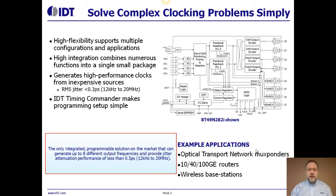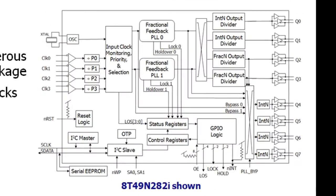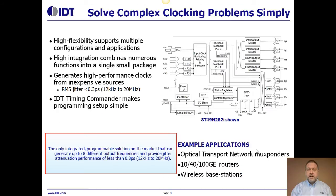So with our third generation of the UFT, we're providing a highly flexible device that will allow support from multiple different configurations, multiple applications, and multiple different markets within a single device. The high integration that you see on our 282 device in the block diagram here — there are multiple functions combined within a single small package. We're able to generate high performance clocks from independent sources like fundamental mode crystals with RMS jitter less than 0.3 picoseconds. And with our IDT Timing Commander software, we've now made programming of a complex flexible device like this very simple. This device was originally developed with communications line card applications in mind. However, we have seen this device and its predecessors used in many different applications across many different market spaces, including some example applications listed here.